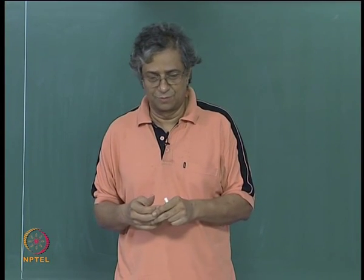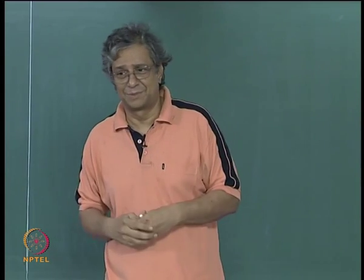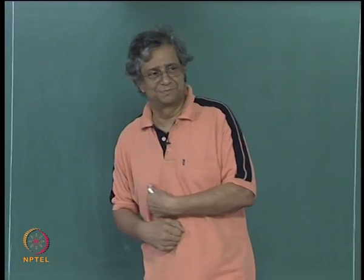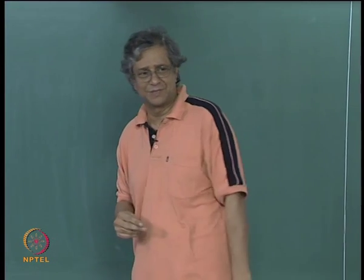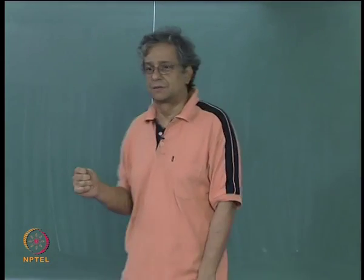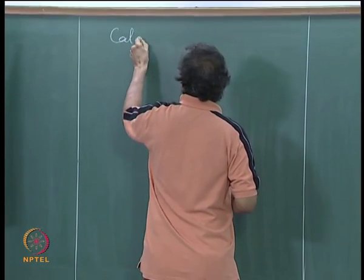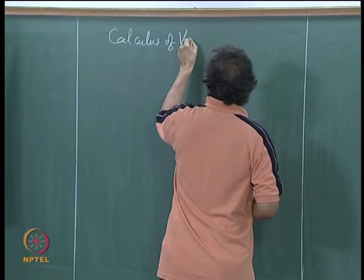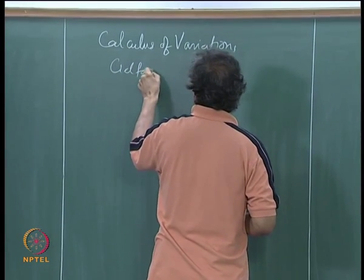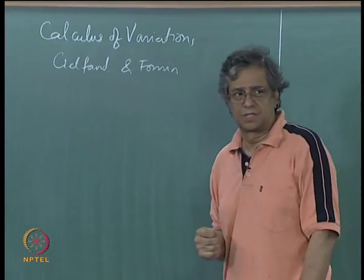There are two ways I could do this: I could give you the motivation right up front, or we could go with the lemmas. We will try out what the lemma is like and then maybe I will give you the motivation. This is by the way following the book calculus of variations by Gelfand and Fomin — a very readable book. You can check it out; the library has it.